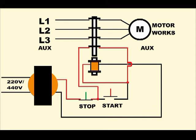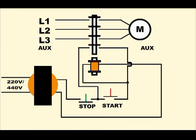If we want to turn the motor off, we will simply press the stop button. The current will be interrupted and the motor will stop. When the stop button is released, the motor will not restart because the auxiliary contact is now open. And in order to restart the motor, the start button must be pressed again.